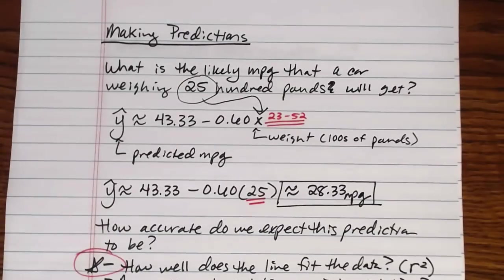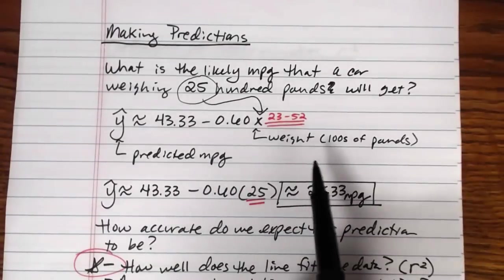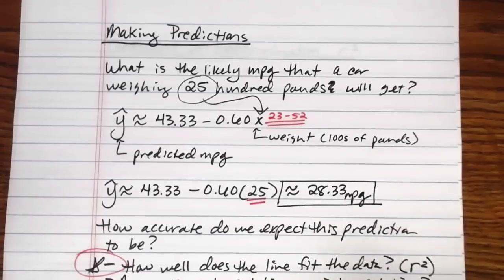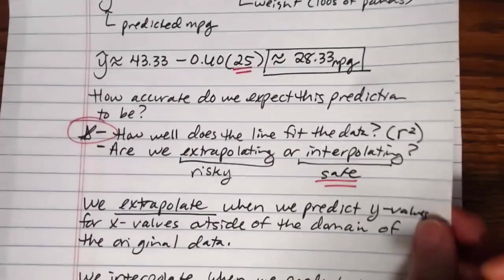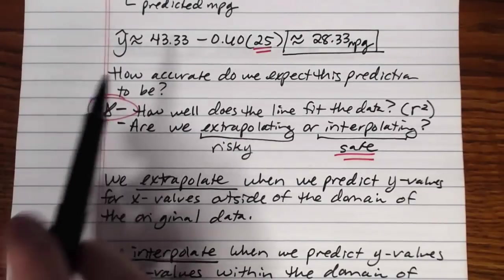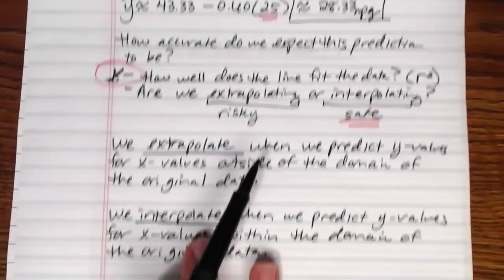And then we were looking at using that line to make predictions. Right, so we plugged in a value to predict what is the predicted miles per gallon for a car that weighs 2,500 pounds. And we got that prediction 28.33 miles per gallon.